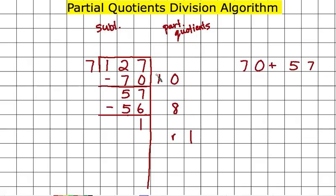Once I've gotten to that point, now I add up the partial quotients. So 10 plus 8 is 18, and I have this 1 left over. So my quotient, my answer to this problem is 18 remainder 1.